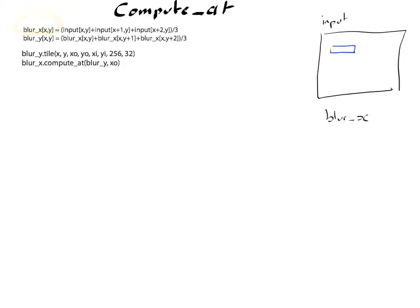which simply computes the average of the three neighbors, and followed by blur y, which computes the average of the three neighbors but in the vertical direction.